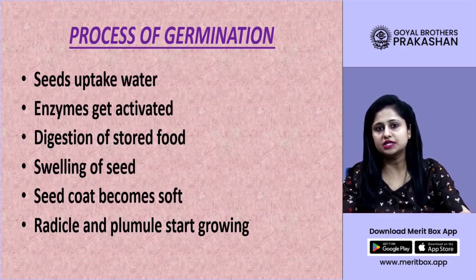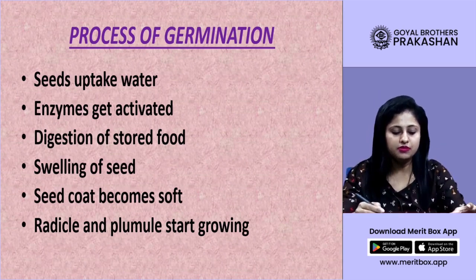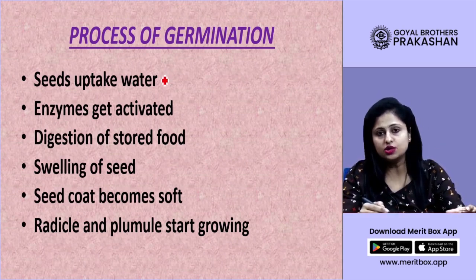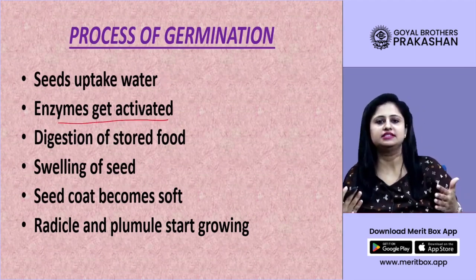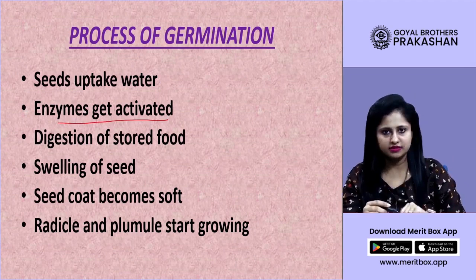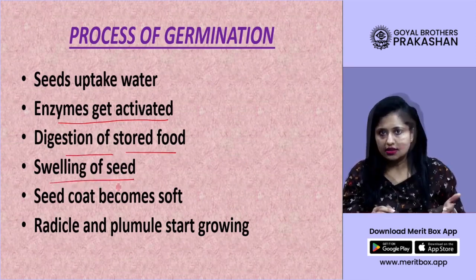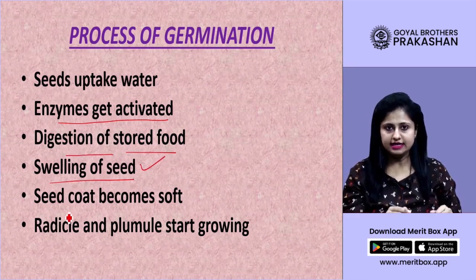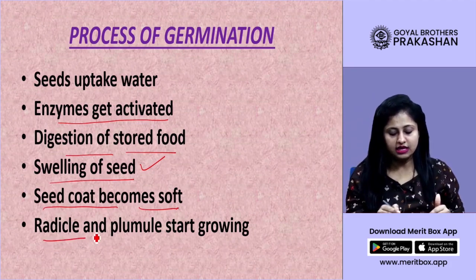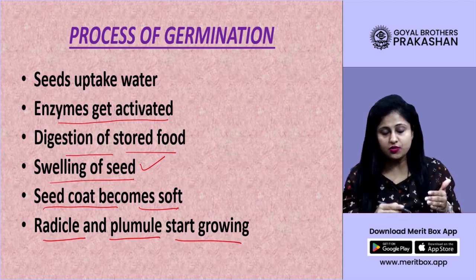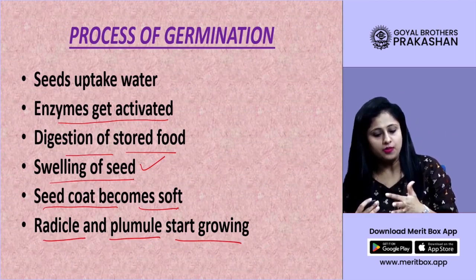Steps involved in germination: first, seeds uptake water; second, enzymes get activated in the seed; third, the stored food is digested; fourth, the seed gets swollen up; fifth, the seed coat becomes soft. Then the radicle and plumule start growing — the root arises from the radicle and the shoot system (leaf and stem) arises from the plumule.